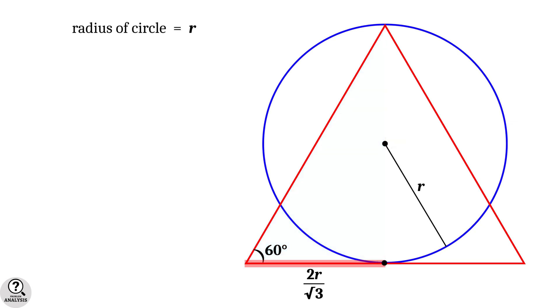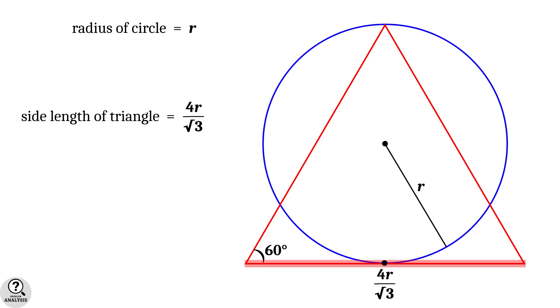Now come back to the figure. And from the figure, it is clear that the side length of the triangle is 2 times 2r by root 3. That is equal to 4 into r by root 3. Therefore, perimeter of the triangle is equal to 3 times 4 into r by root 3. That is equal to 4 root 3 times r.